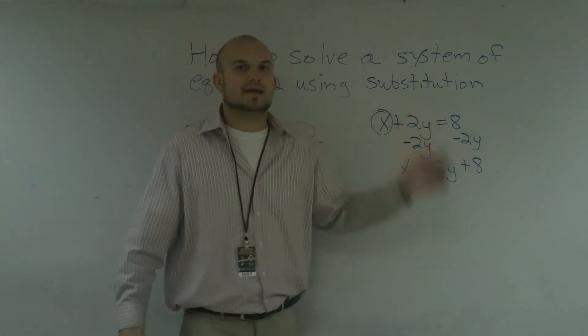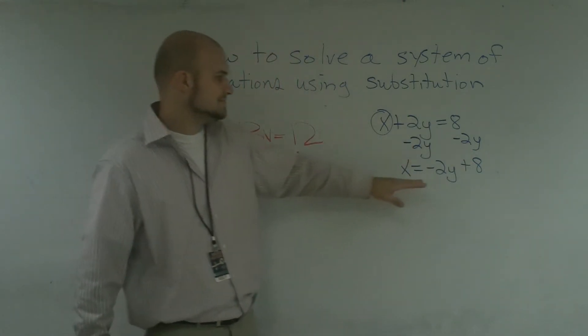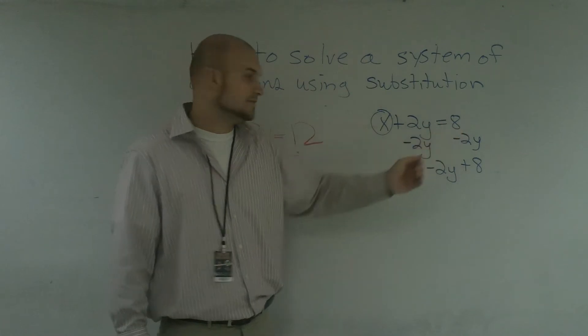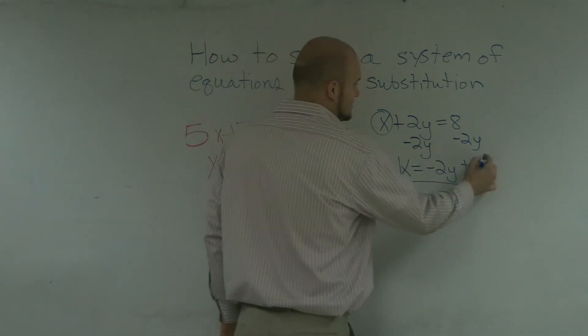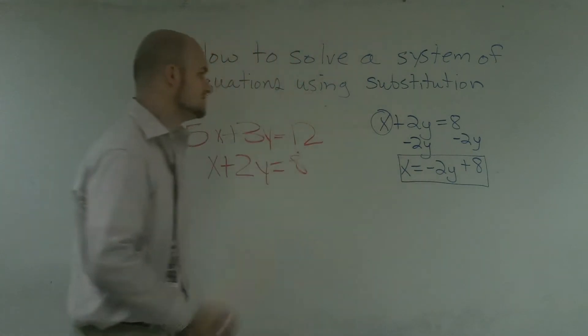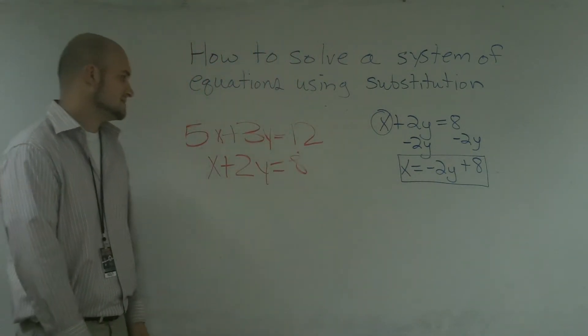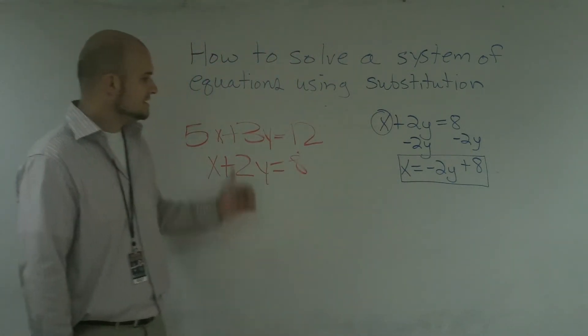And I'm writing the negative 2y in front of the 8, because that is mathematically correct. We like to always write the variable in front of the constant. So, now, I've just solved a problem for x equals negative 2y plus 8.